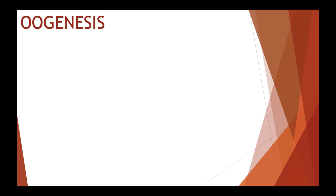Oogenesis is the process of production of the female gamete. In a human female, the development of mature oocytes takes a long time. Immature eggs are present in the ovary and are formed in the developing embryo before birth, but complete their development many years or even decades later during puberty. The production of mature gametes stops at about the age of 45 to 50 years.